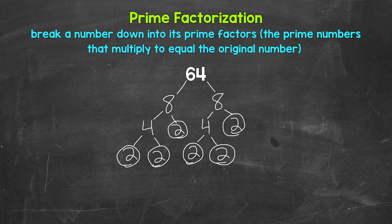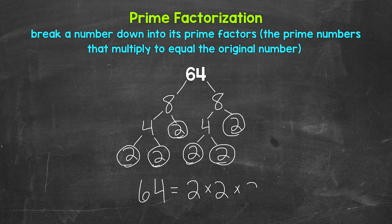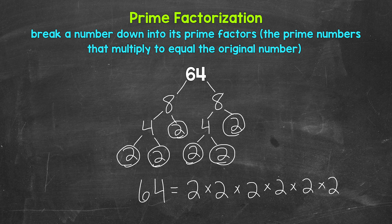This is the prime factorization of 64. We cannot break anything else down any further. Let's write this out as 64 equals, and then we can write out all of our prime factors. It looks like we have six 2s, and we're going to multiply them: 2 times 2 times 2 times 2 times 2 times 2. Now if we have the correct prime numbers, they will multiply and equal our original number. So let's check: 2 times 2 is 4, times 2 is 8, times 2 is 16, times 2 is 32, times 2 is 64. So we are correct.